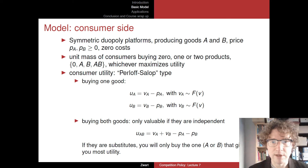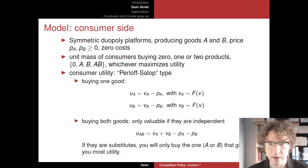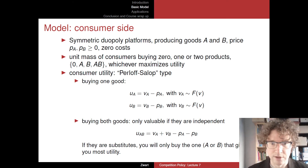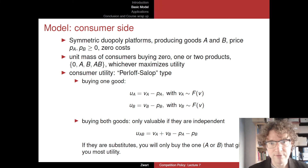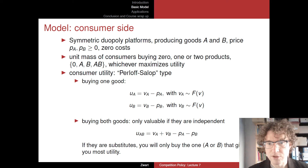The utility is described by something called Perlov-Salop type utility. If a consumer buys only good A, the utility will be some value VA that they derive from getting good or service A, and they pay price PA for that good. So the net utility is going to be VA minus PA.